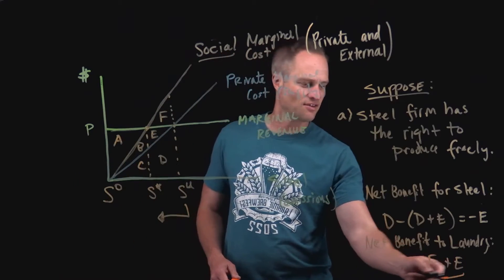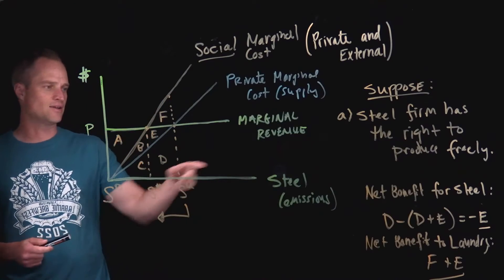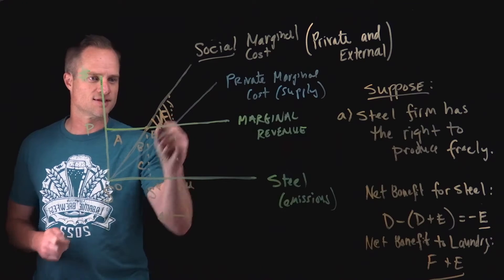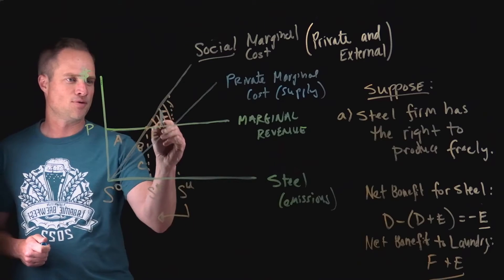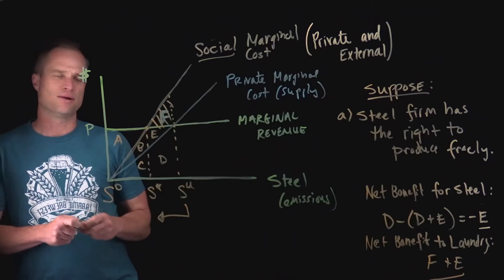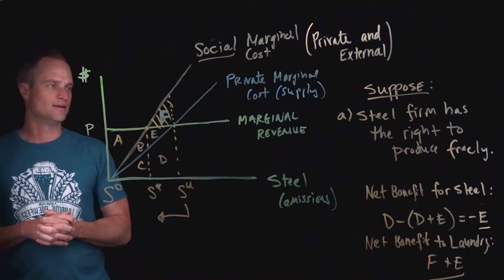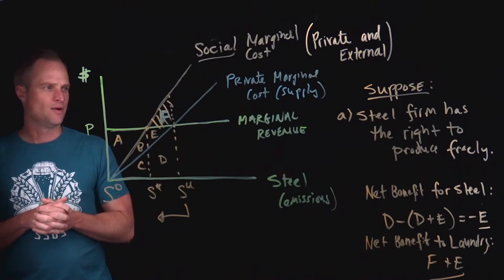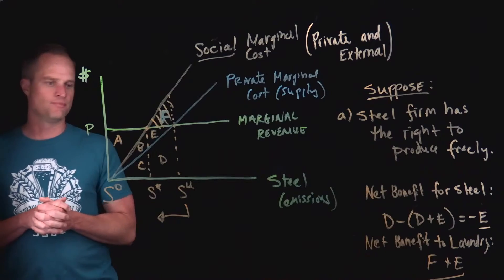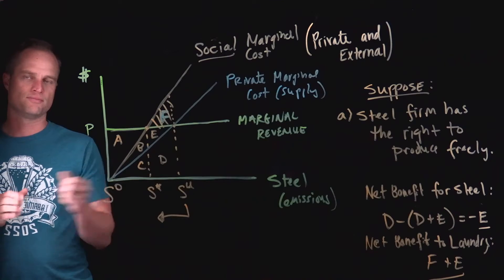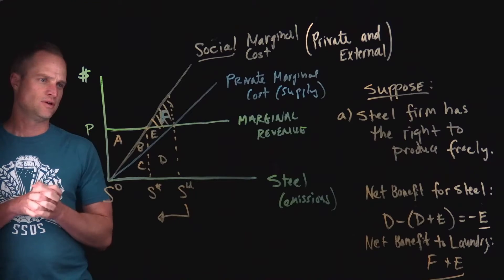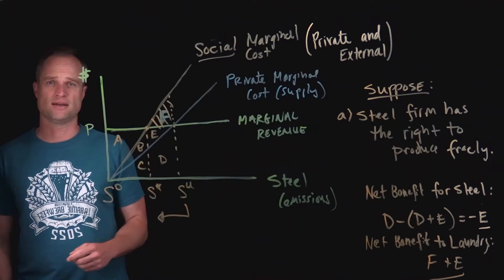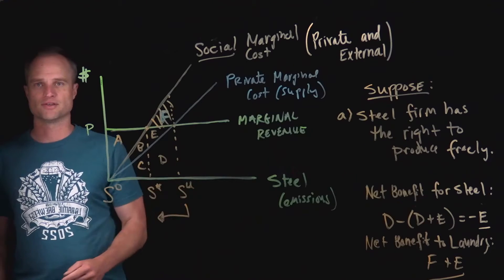If we compare the net benefits — F+E for the laundry and −E for the steel firm — society gains area F in aggregate from moving from S^U to S*. Thinking about the payments: the laundry firm would be willing to pay up to F+E to move from the unregulated level to the efficient level, and the steel firm would need to receive at least E to cover its loss.